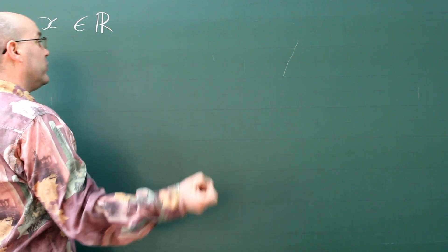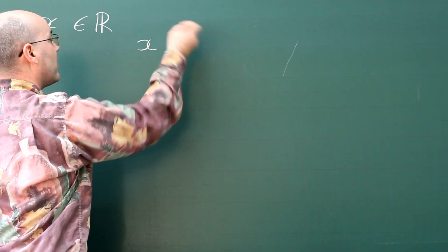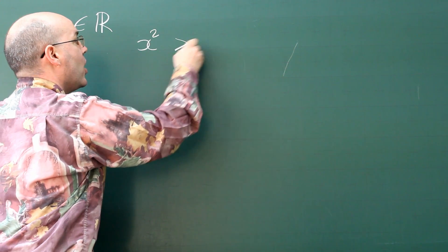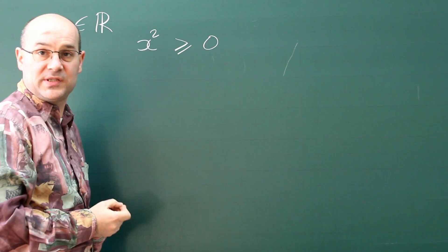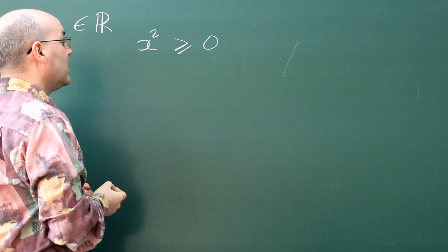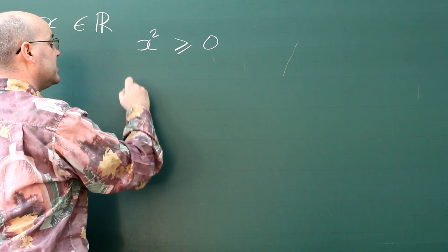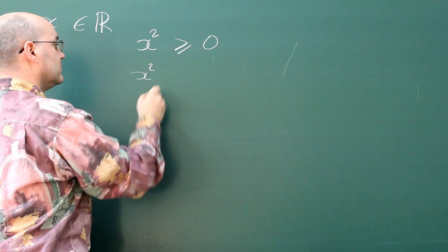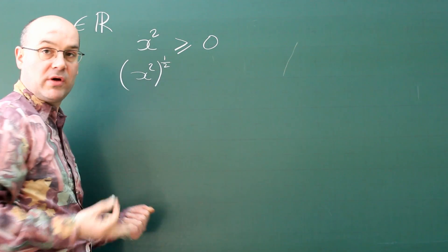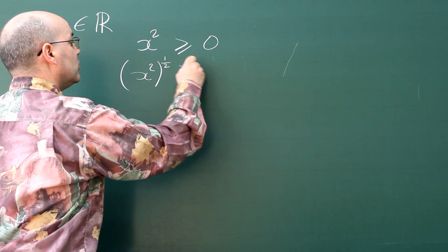So how do I do this? Well, it's very easy. I put this number X to the square, which is obviously always positive. Then I'm going to use another power. I'm going to put this to the power of the half. If you don't know what the power of the half is, it's actually the same as square root.